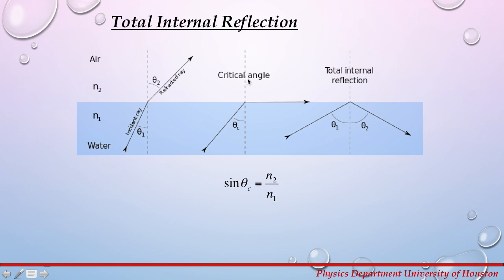In our case, n2 is air, so it is equal to 1. Therefore, sin θc equals 1 over n1, where n1 is the index of refraction for the medium — in our case, water.